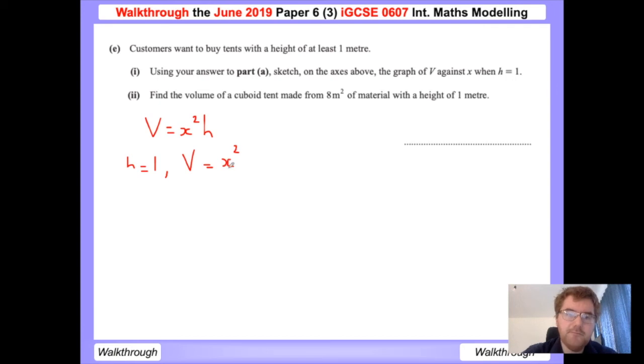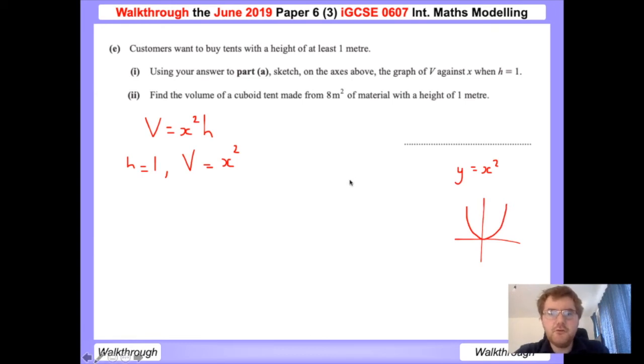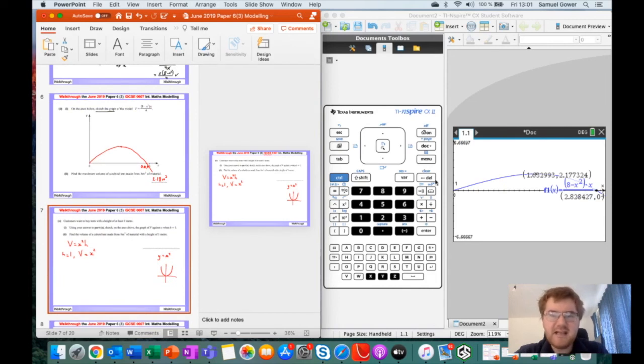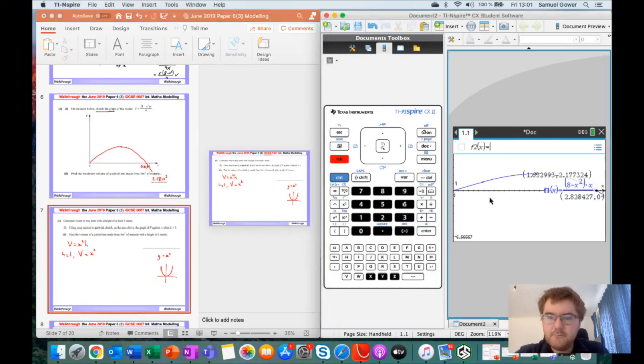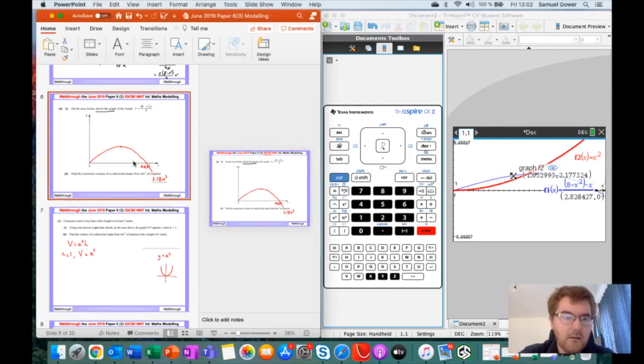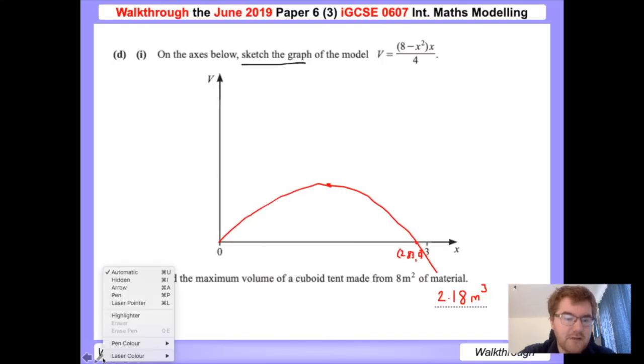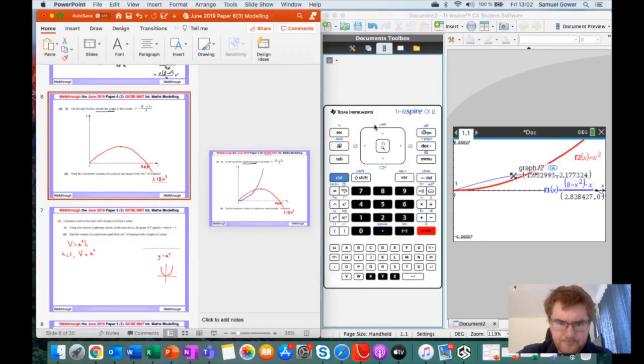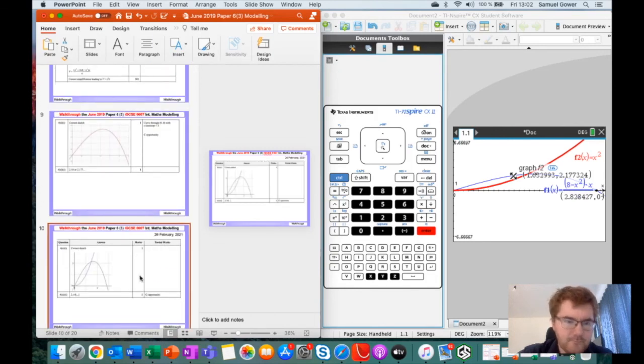So we need to go back to the previous question. The graph of v against x when h is 1. Well, this is just going to be a parabola. Remember y equals x squared. If you're not sure about that, you can always go back to your GDC. Press tab to create your second function, which is going to be x squared. So if you're not sure what y equals x squared looks like, put it into your GDC. Then we're going to draw a sketch. Notice the parabola goes up before the maximum point. So do make sure you're accurate with doing this.